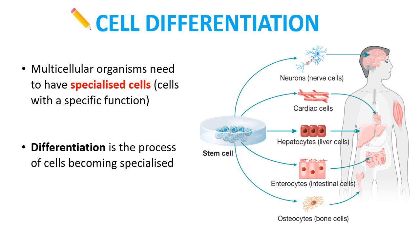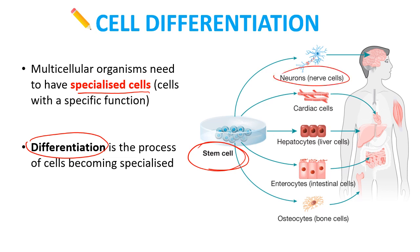Cell differentiation is the first big idea. In all multicellular organisms, we're not just a ball of all the same type of cells — we need our cells to do different jobs. Specialized cells are cells with a specific function, and cell differentiation is the process of cells becoming specialized as we develop from a single fertilized egg as we grow as an embryo. It's stem cells that drive differentiation.